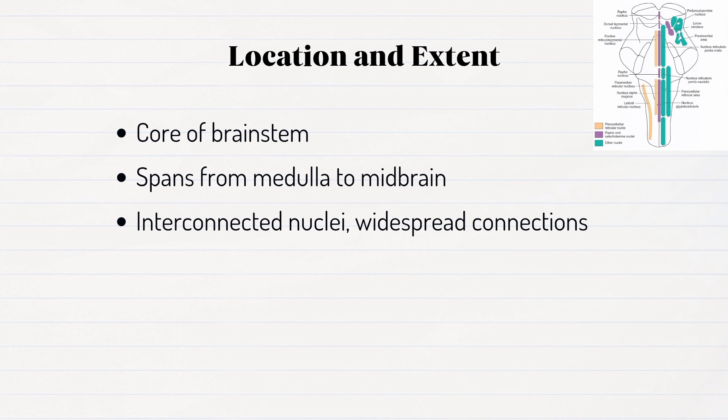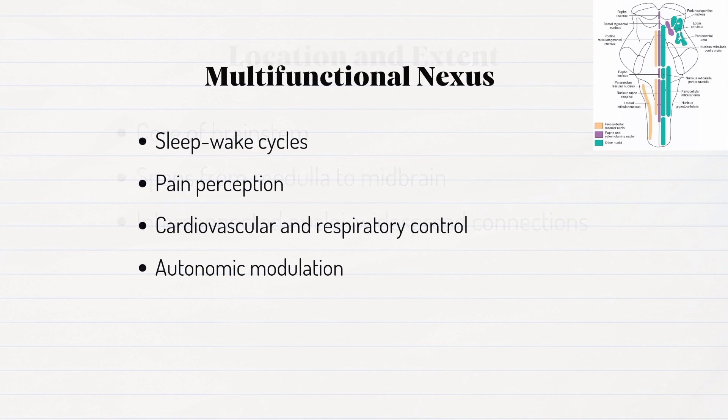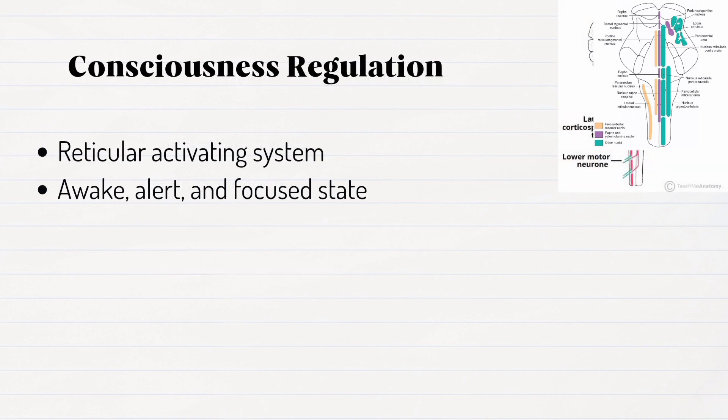It is composed of interconnected nuclei with extensive connections throughout the nervous system. The reticular formation is involved in sleep-wake cycles, regulation of pain perception, cardiovascular and respiratory control, and even modulation of the autonomic nervous system. One of its most critical roles is in regulating consciousness.